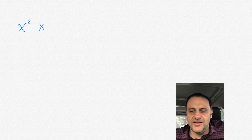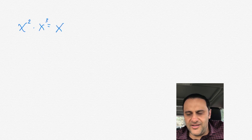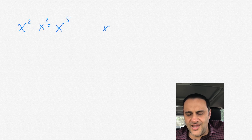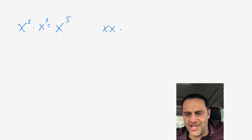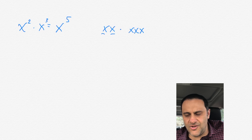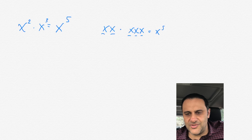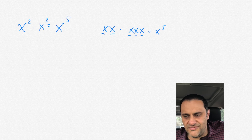If you have x squared times x cubed, what you do with x to the 2 and x to the 3, you just simply add 2 plus 3, and then you get x to the 5. The reasoning here is x squared is like x times x, and x cubed is x times x times x. So if you see there, we have five x's, so it would be x to the 5. That's why we just add the 2 and 3 to get 5, which is faster.